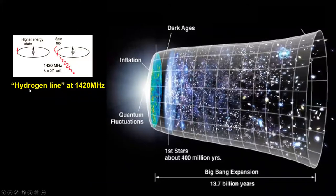What do we want to measure? We want to measure the hydrogen line. When you have hydrogen, hydrogen can have two energy states, and the energy states depend on the spin of the electron that orbits around the nucleus.